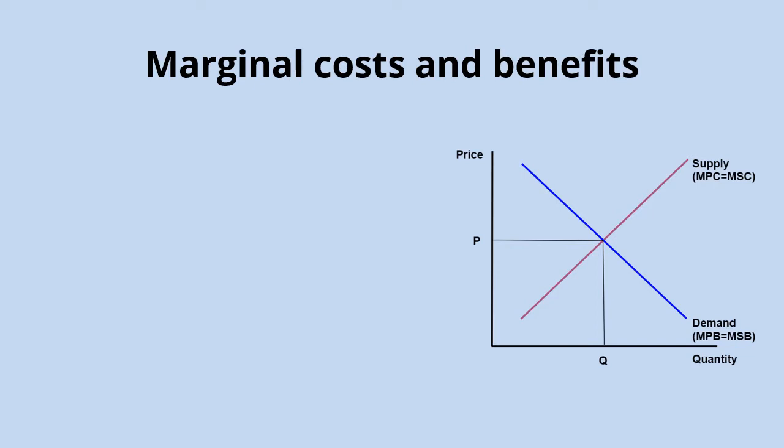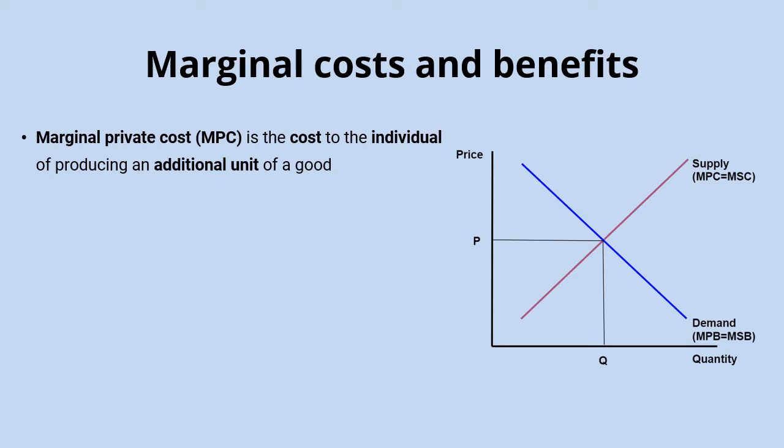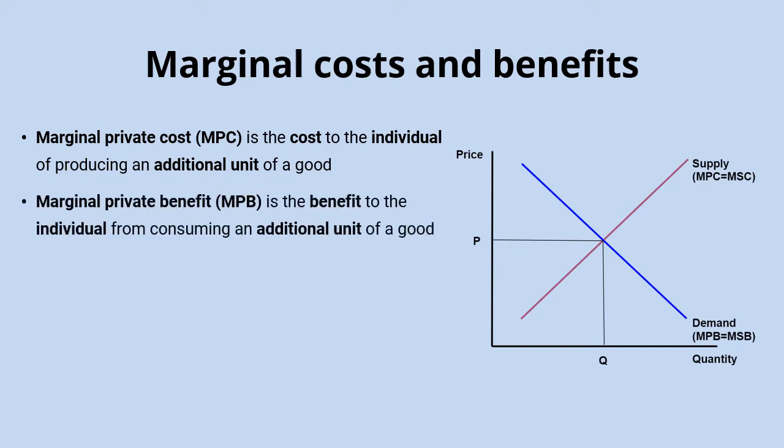Going through these different types of costs and benefits: when we talk about a marginal cost or benefit, we're talking about the impact of adding one additional unit to that current situation. So the marginal private cost is the cost to the individual — generally that means an individual firm, a business that is actually producing the output — of producing an additional unit. The marginal private benefit is the benefit to the individual, generally a consumer, from consuming an additional unit of a good.